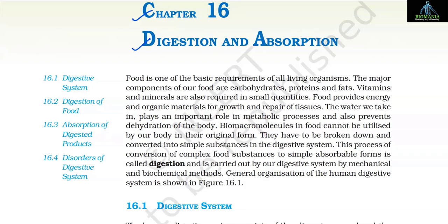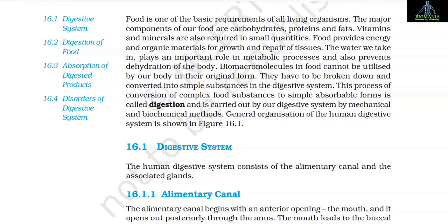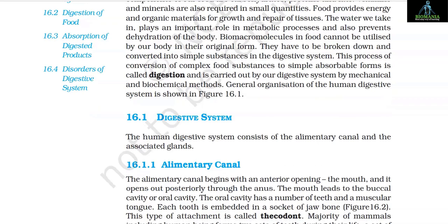Chapter 16: Digestion and Absorption. Food is one of the basic requirements for all living organisms. The major components of our food are carbohydrates, proteins and fats. Vitamins and minerals are also required in small quantities. Food provides energy and organic materials for growth and repair of tissues. The water we take in plays an important role in metabolic processes and also prevents dehydration of the body. Biomacromolecules in food cannot be utilized by our body in their original form; they have to be broken down and converted into simple substances in the digestive system. This process of conversion of complex food substances to simple absorbable forms is called digestion, and is carried out by our digestive system by mechanical and biochemical methods.